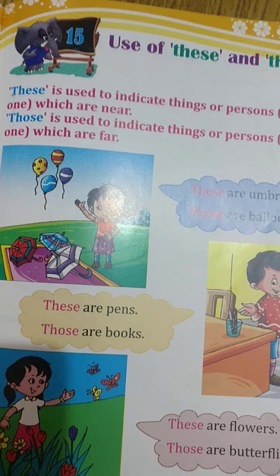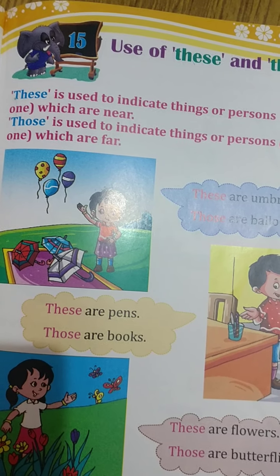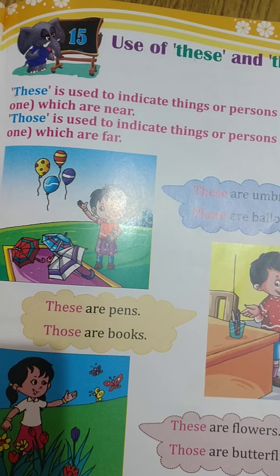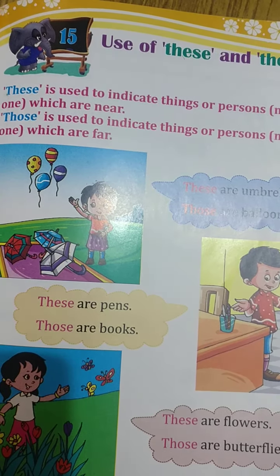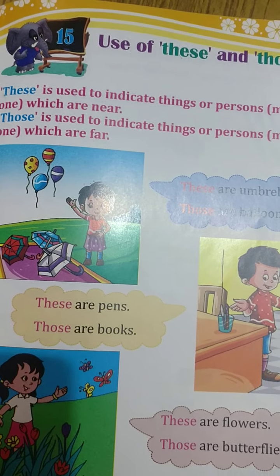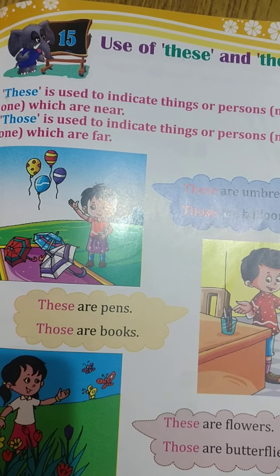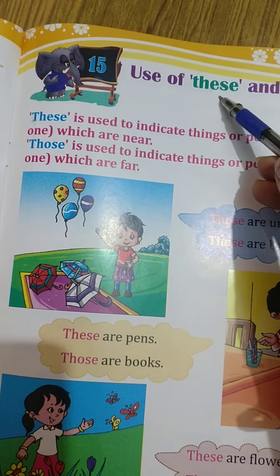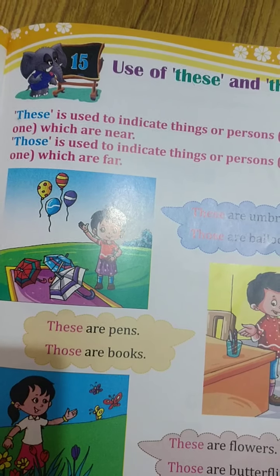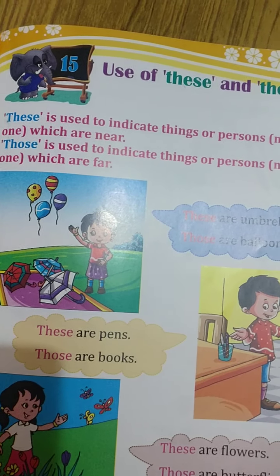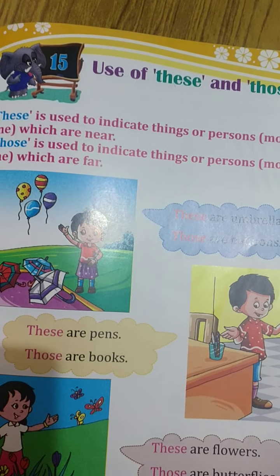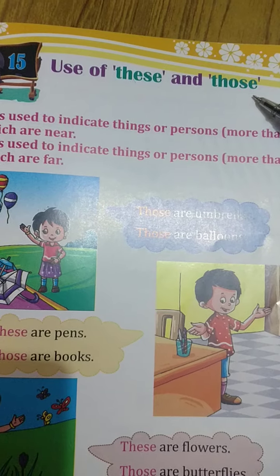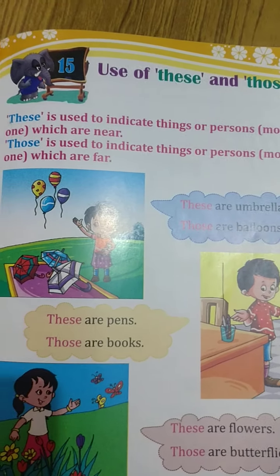Plural means more than one. So if there is more than one object and it is near, which word will we use? We will use 'these.' And if the objects are more than one and far from us, then what will we use? We will use 'those.'